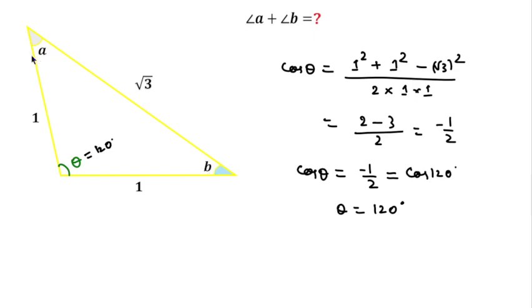So we have to find the sum of these two angles. And as we know, sum of angles of a triangle is equal to 180 degree.